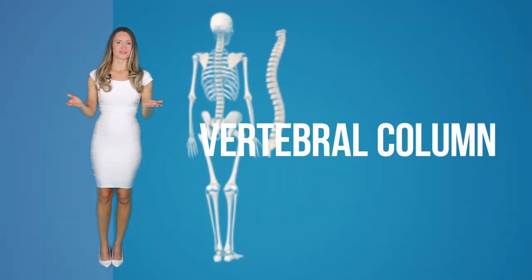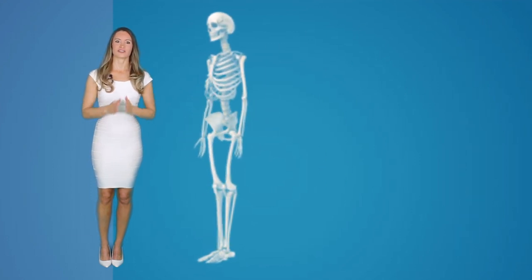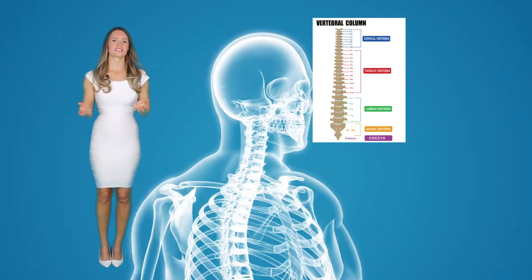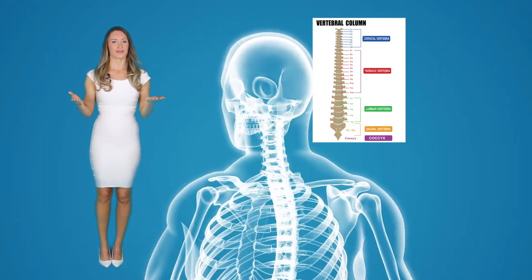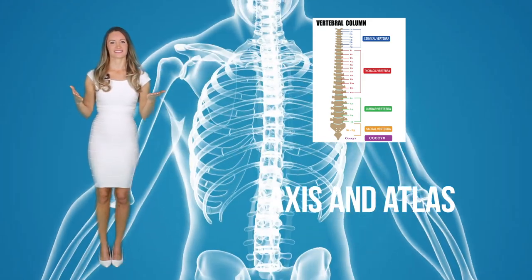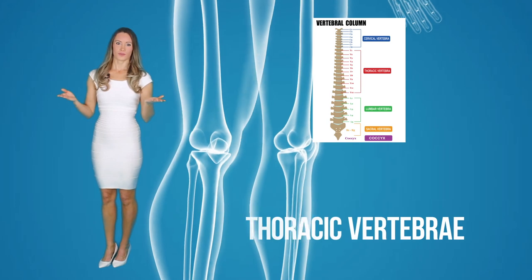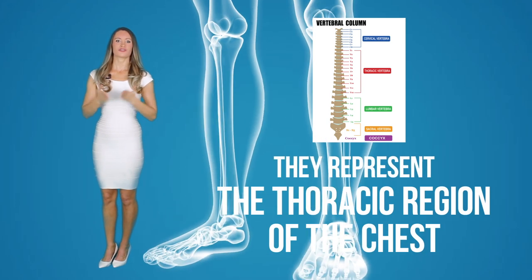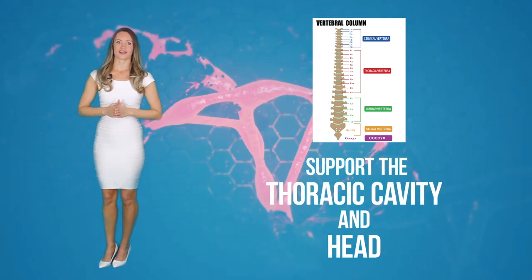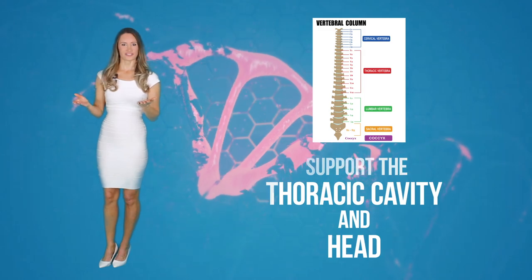The vertebral column is the last component of the axial skeleton. It is divided into the cervical vertebrae, which is the first part and consists of seven bones called vertebrae. The first two of these bones are called the axis and the atlas, and they support the head. The thoracic vertebrae are the second group, representing the thoracic region of the chest. They are twelve, supporting the thoracic cavity and the head, and they also house the nerves that innervate the upper region.